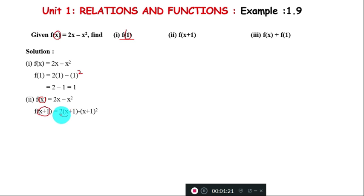Expanding: 2(x+1) - (x+1)² becomes 2x + 2 minus the expansion of (x+1)². Using the formula (a+b)², we get x² + 1 + 2x.